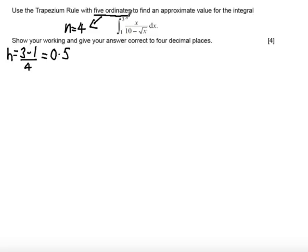That means we will count in steps of 0.5 from 1 up to 3, and that will give us five ordinates. For the x_n values, I like to create a table, and then we have our y_n values. So our first value is 1.